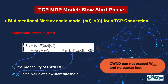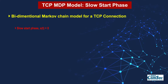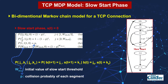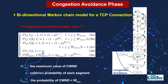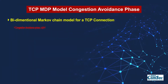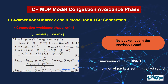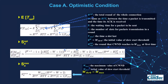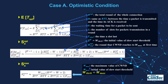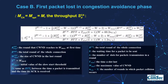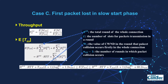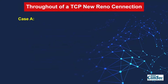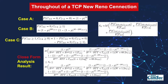This is the one-step transition probability in the slow-start phase, where the initial value of the slow-start threshold and the collision probabilities of each segment are key parameters. This is the one-step transition probability in the congestion avoidance phase, where the maximum value of the window (WND), the collision probability of each segment, and the probability of the WND are key parameters. We analyze three cases: the optimistic case with no packet loss in the whole TCP connection, the case of the first packet lost in the congestion avoidance phase, and the case of the first packet lost in the slow-start phase. We can obtain the analysis results in closed form.